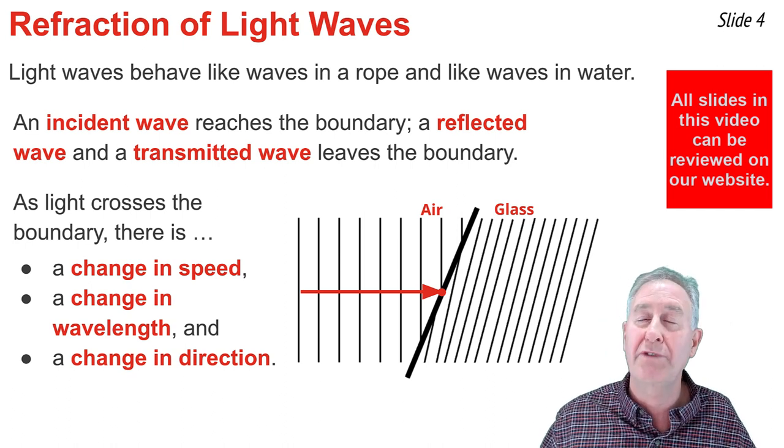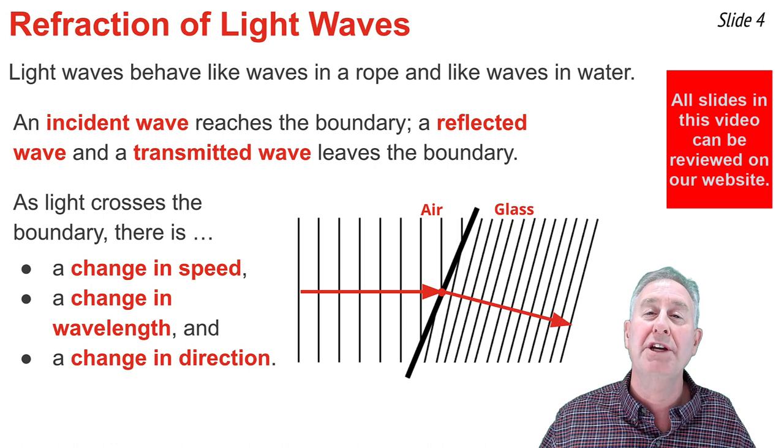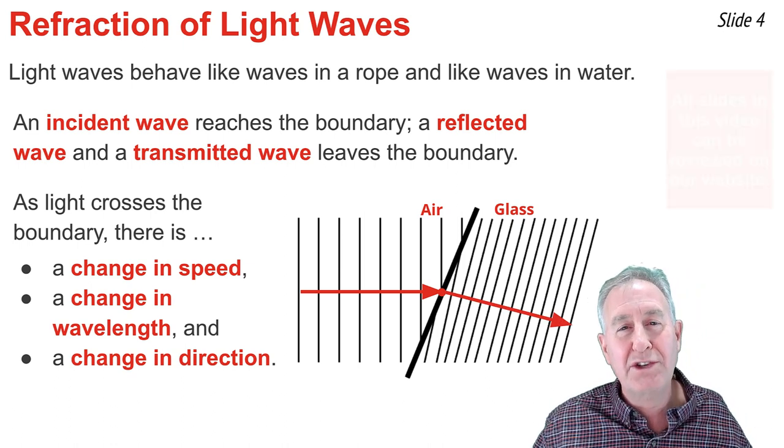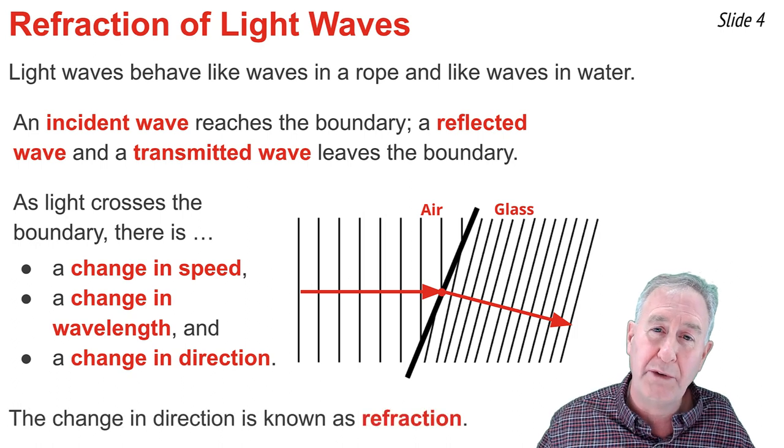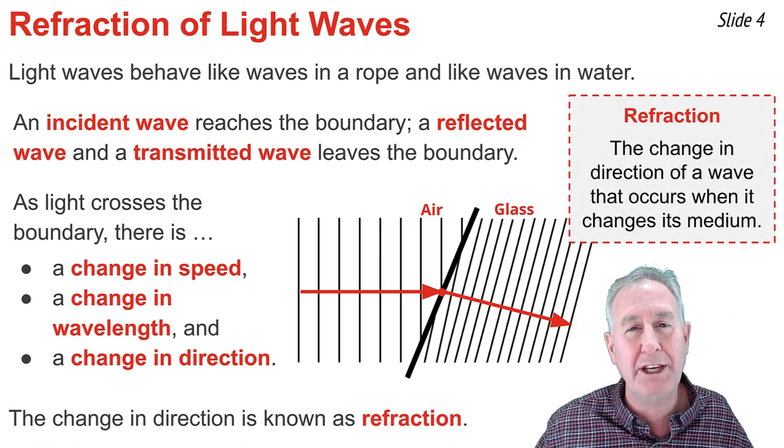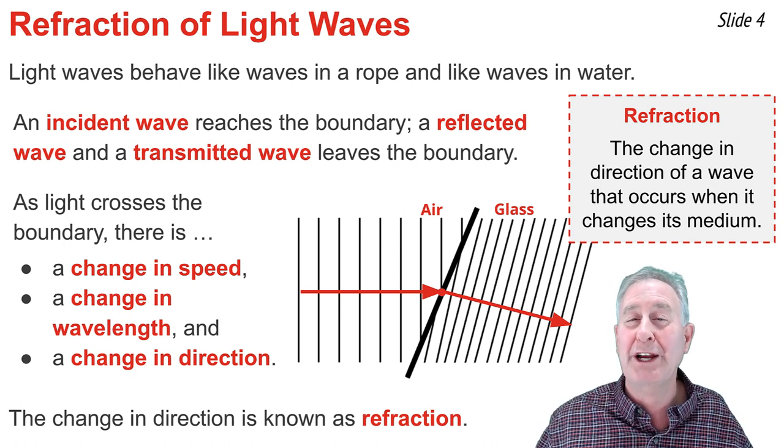And because the direction of those incident waves is not perpendicular to the boundary, there will also be a change in direction, as represented by the red arrow. This change in direction is known as refraction, and we observe it to take place as long as there's a change in medium for a light wave, and as long as that light wave is approaching the boundary in a direction that's not perpendicular to it.